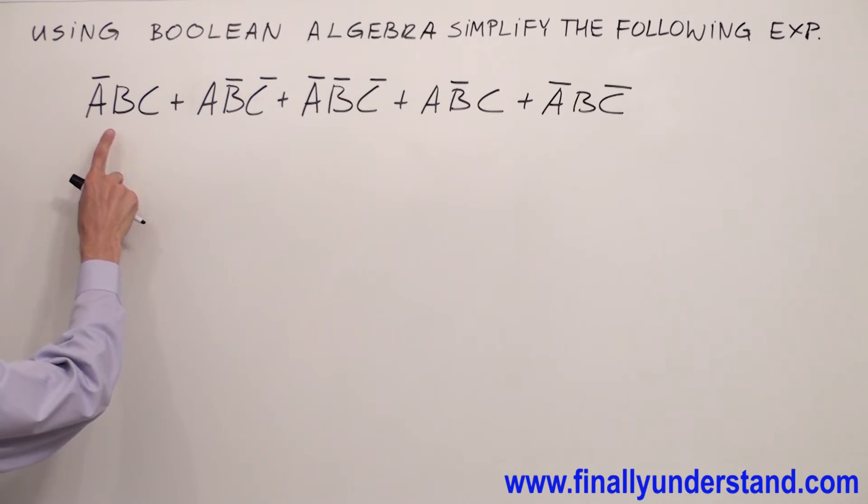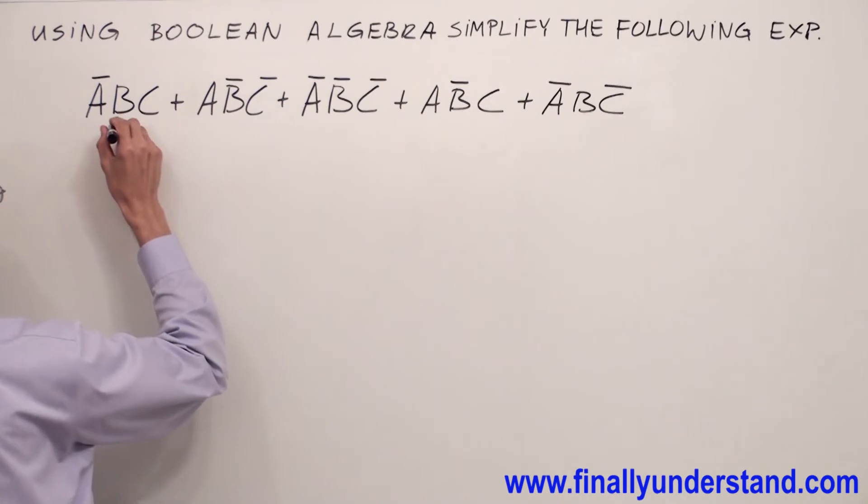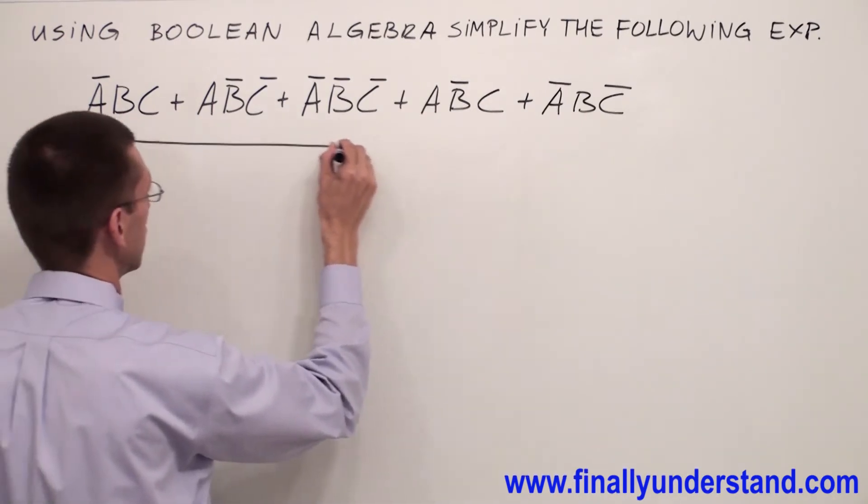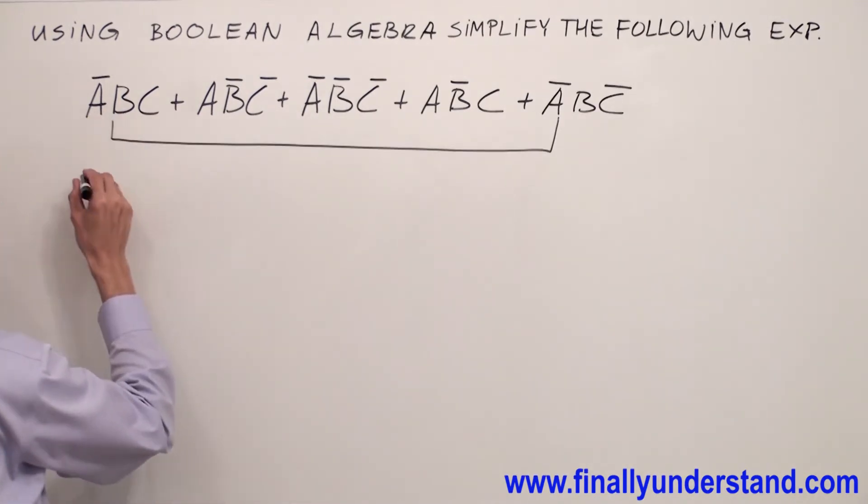So I have, in this case, I have B and I have A' in this term and this one. I'm going to factorize A', B from these two terms.